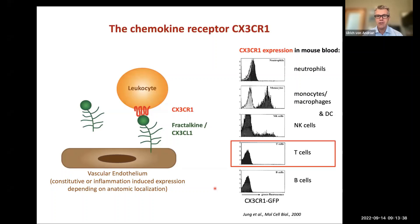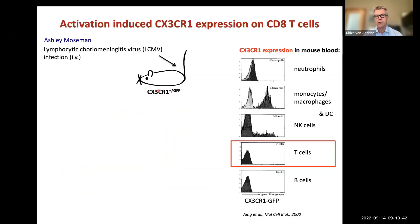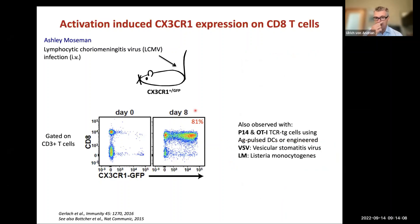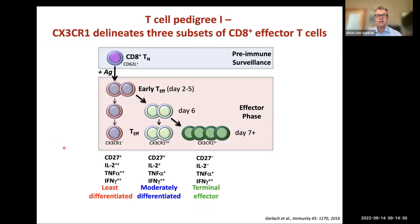However, this is only true in the naive state where T-cells have never been stimulated. Ashley Moseman, a graduate student in my lab, infected CX3CR1-GFP reporter mice with LCMV. In a naive mouse there are basically no GFP-positive CD8 T-cells, but on day eight at the peak of the effector response to LCMV, over 80% of CD8 T-cells were CX3CR1-positive. This was not specific to LCMV-specific cells — it doesn't matter what kind of T-cells or what stimulus you use; it is a very robust phenomenon.